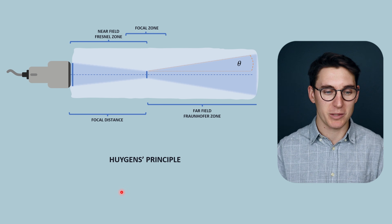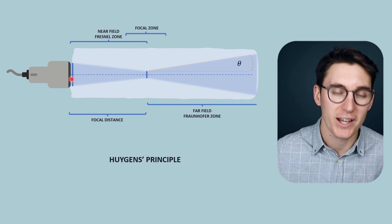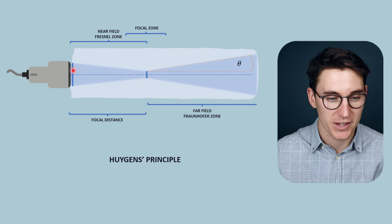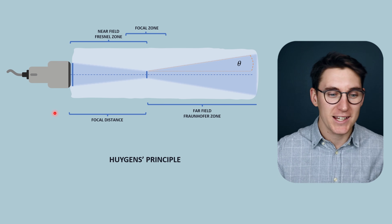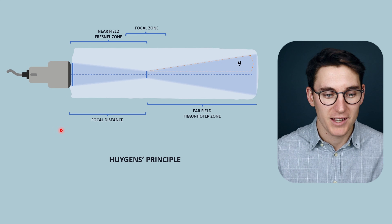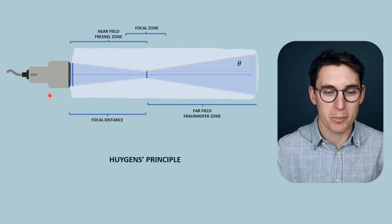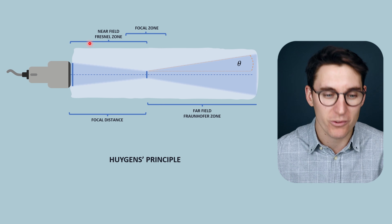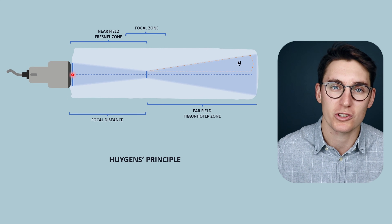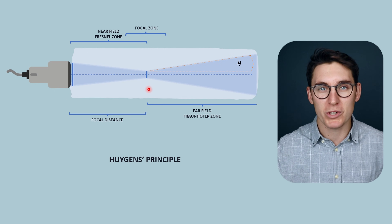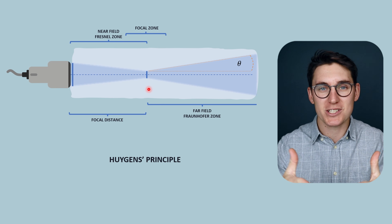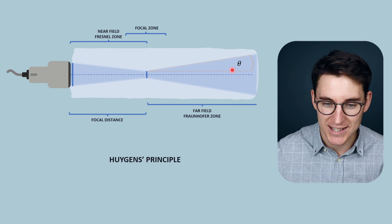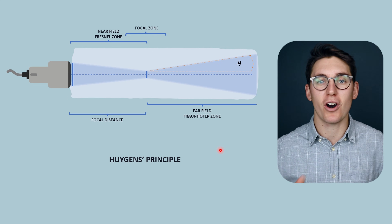Looking at an ultrasound beam from a single element transducer, we have beam forming on the face of the transducer. The diameter of our transducer is the diameter of our ultrasound beam. That beam will naturally converge to a point known as our focal point, and that converging region is also known as our near field or Fresnel zone. The beam then diverges at a set angle known as the divergence angle - this is our far field.